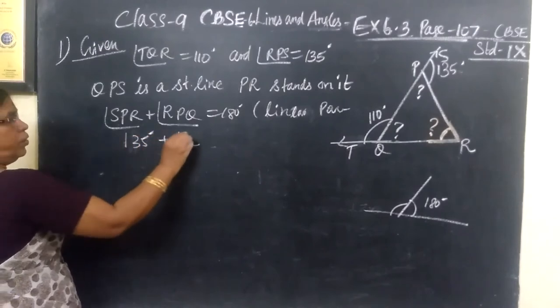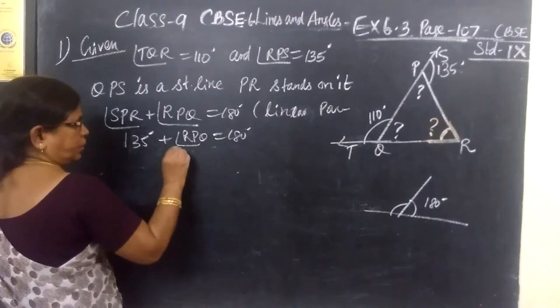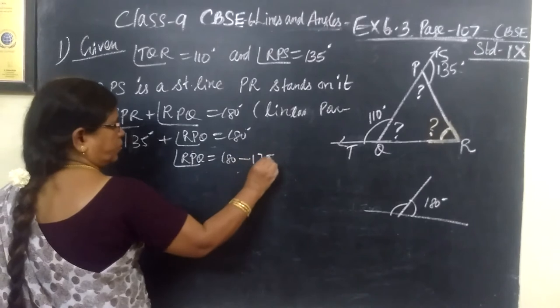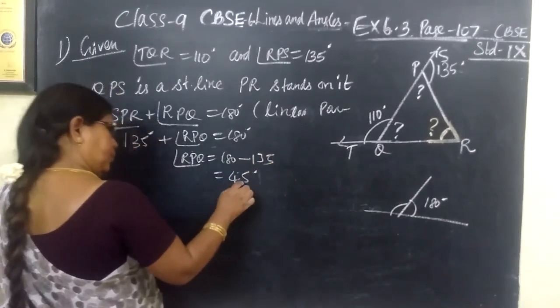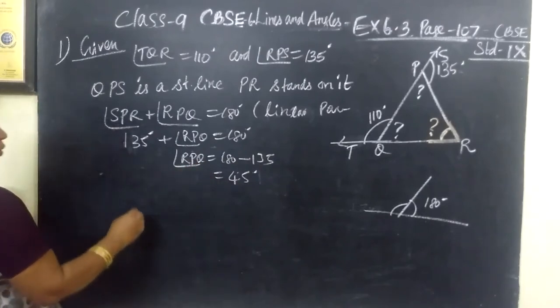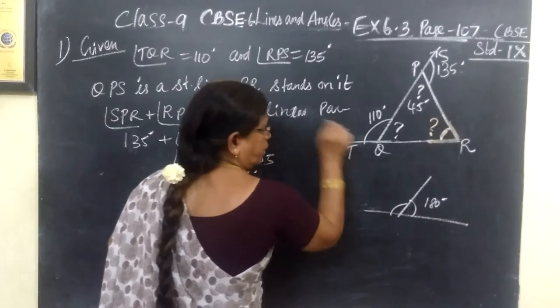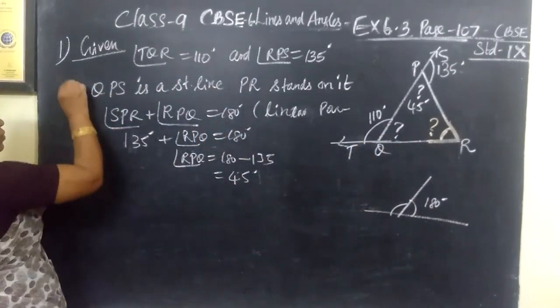Then RPQ equal to 180 degrees. Therefore, RPQ equal to 180 degrees minus 135. That is equal to 45. So one angle we have found, this is 45 degrees.